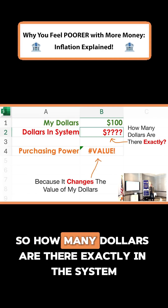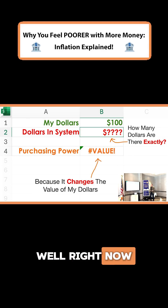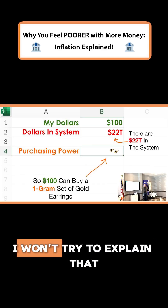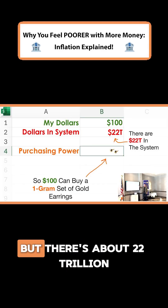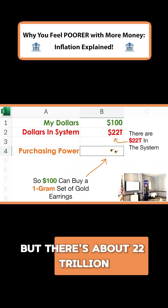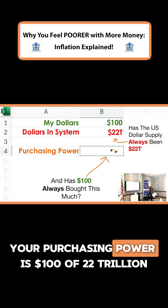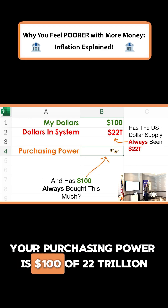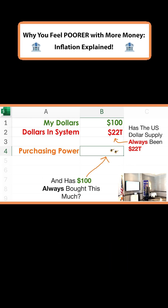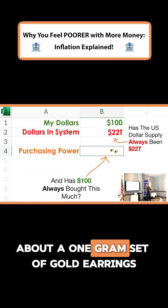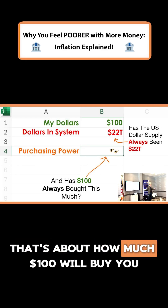So how many dollars are there exactly in the system? Right now for the US dollar it's called M2 money supply — there's about 22 trillion. Which means if you have a hundred dollars, your purchasing power is a hundred dollars of 22 trillion, which will buy you about one gram set of gold earrings. That's about how much a hundred dollars will buy you.